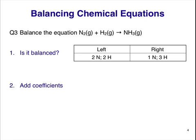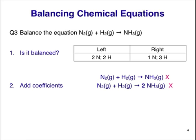To balance the equation, we'll add coefficients. Remember, these are numbers that go before the chemical formulas to multiply everything in the formula by the coefficient. We can add coefficients to any chemical formula in the equation. Starting with N, I can see I have two on the left but only one on the right. If I add a coefficient of 2 before the NH3, I can balance the N atoms. Now we can look at the next atom, H. I've got two on the left and now six on the right. I have three H atoms in each NH3 molecule, but the coefficient of 2 means I have two molecules, or six H atoms.